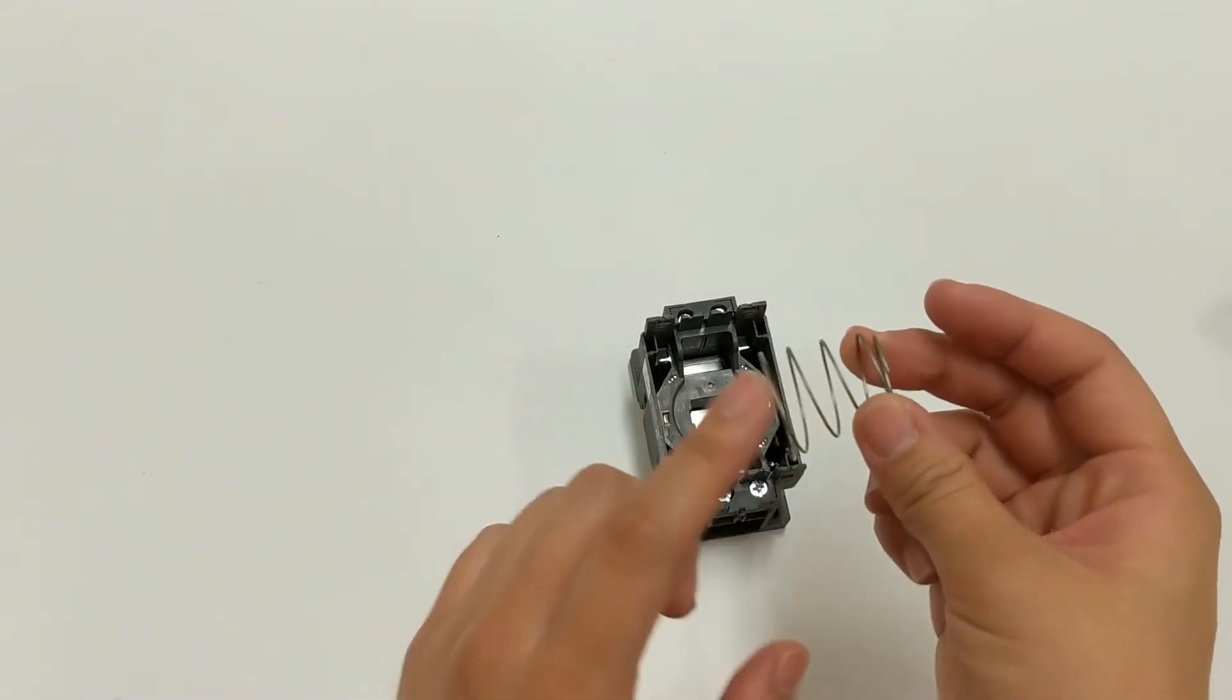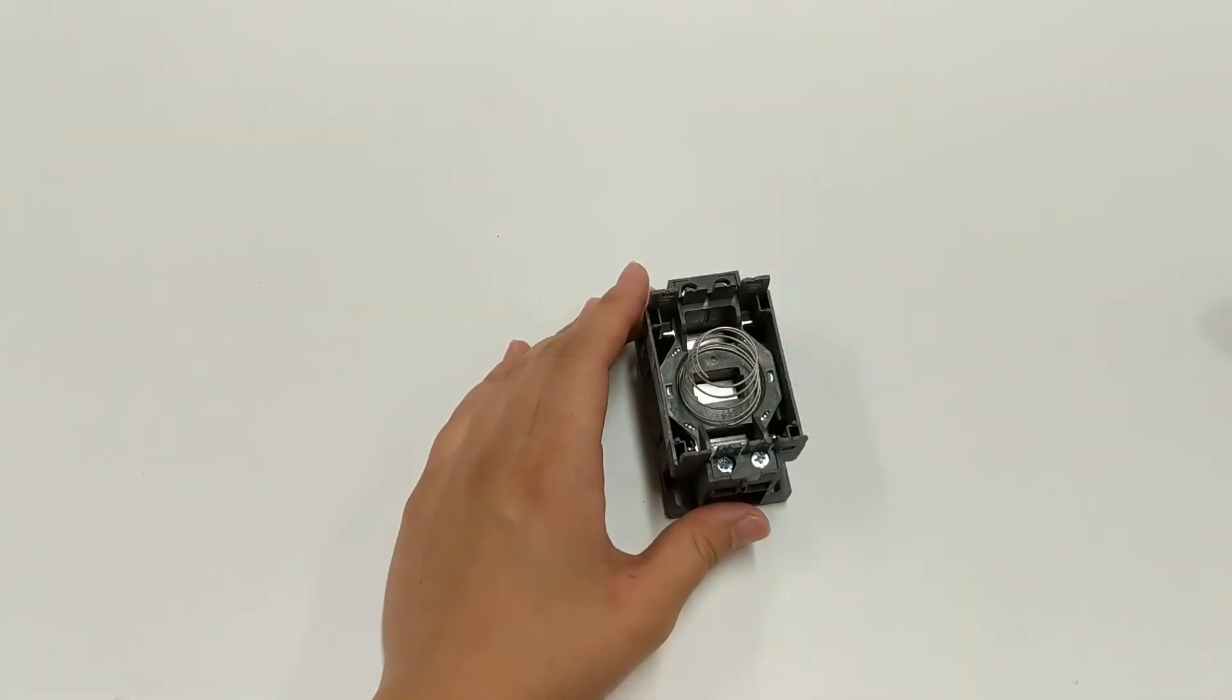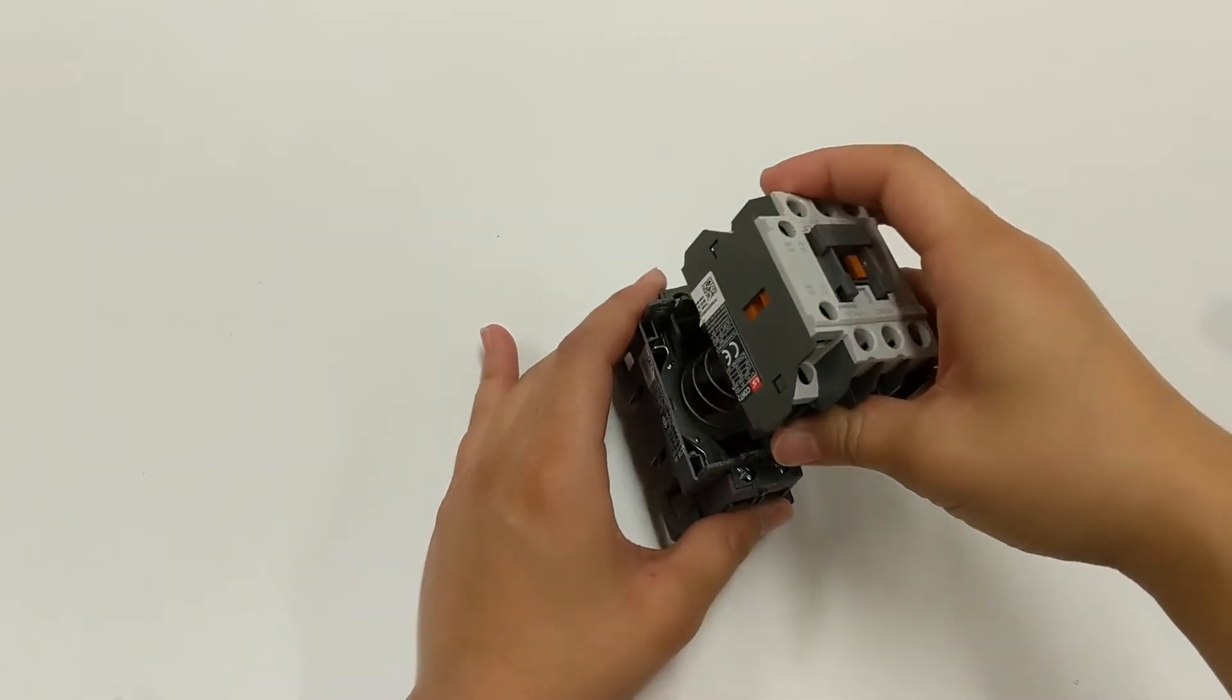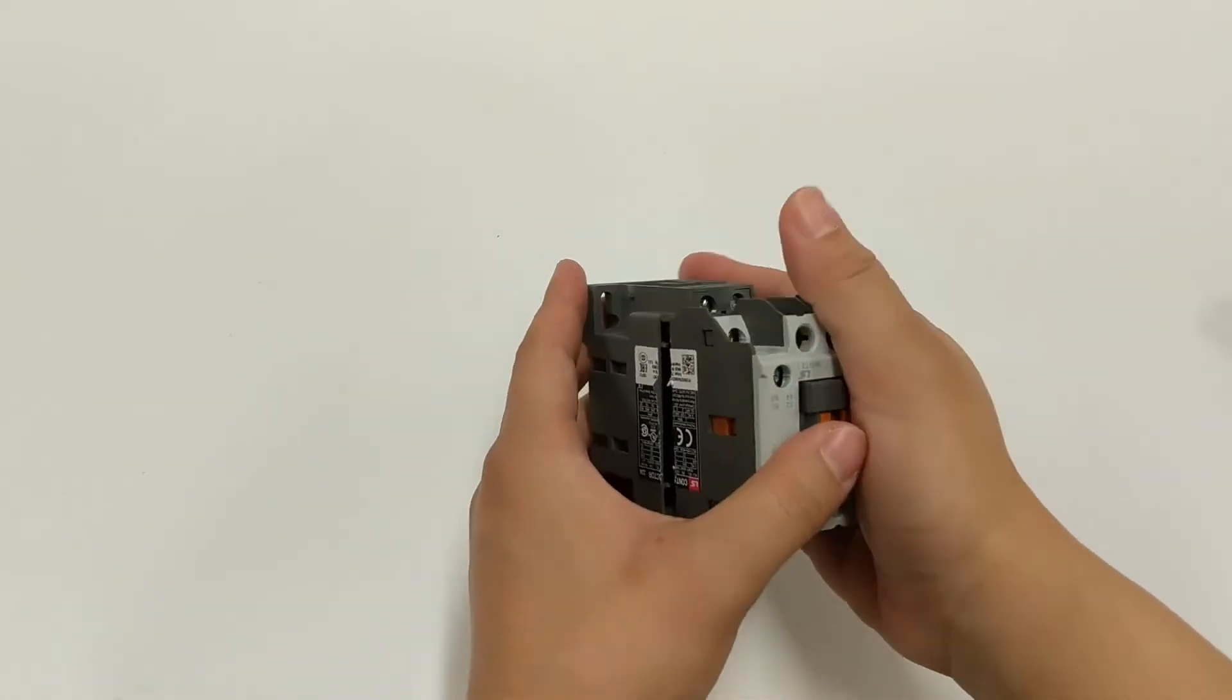Replace the spring with the larger side down and place the top half of the contactor back onto the bottom half to reassemble. Use the nameplate label to confirm the orientation of the top and bottom match and snap together.